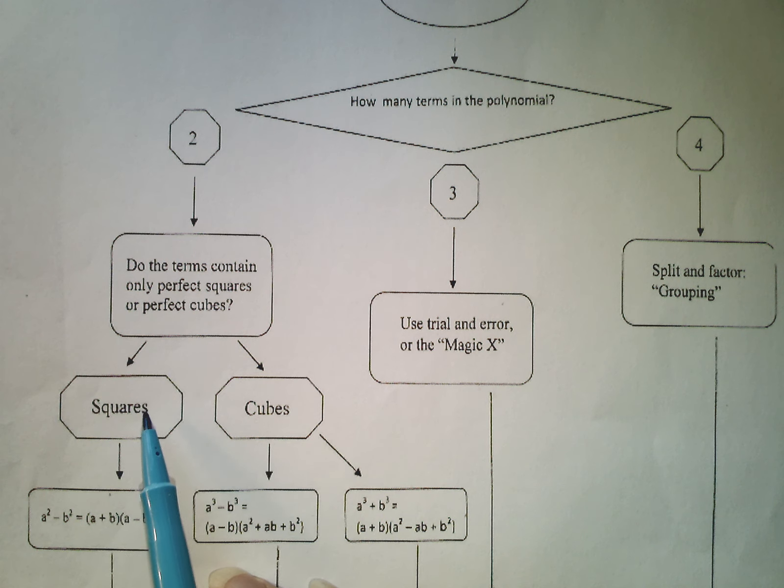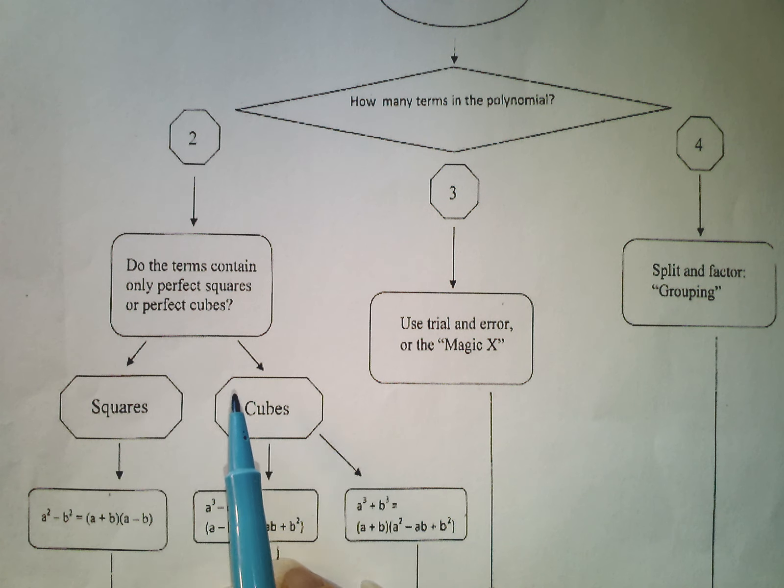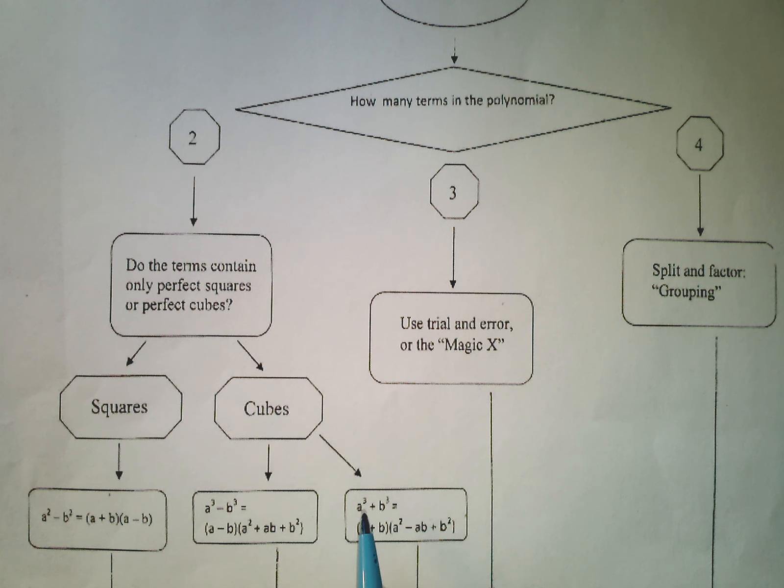maybe it's the difference of two perfect squares. Maybe it's the difference of two perfect cubes. Maybe it's the sum of two perfect cubes. And we have ways of dealing with all of those.